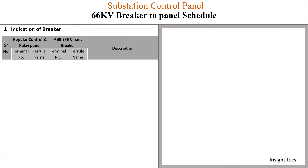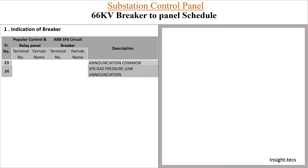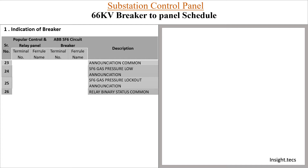Now let's start the schedule for the annunciation circuit and giving digital inputs to the digital relay. What we will need for the annunciation circuit: annunciation common, SF6 gas pressure low annunciation. Whenever the SF6 gas is lower than specified limits for the breaker, there will be a lockout. So we have to give annunciation for SF6 gas pressure lockout. Then we will start about digital relay inputs — we will need a common for that, then input of SF6 gas lockout and CB open status. According to the requirement of relays, you can take many other inputs as required.